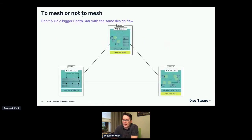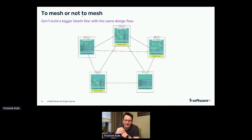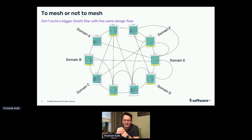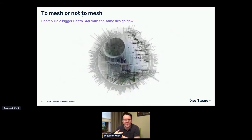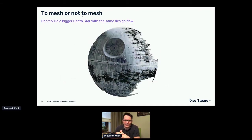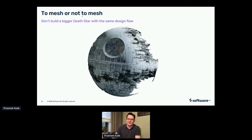So we do the same thing again — maybe we applied Service Mesh, maybe we applied domain-driven design, but that's it. We start our journey again. We think we fixed everything, but what may still happen if we don't do something extra is that we can just build a bigger Death Star. Right now our building blocks won't be individual microservices but maybe domains. So just solving some aspects won't make our architecture immune to the mistakes from the past.